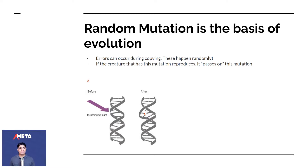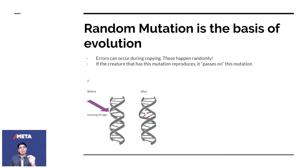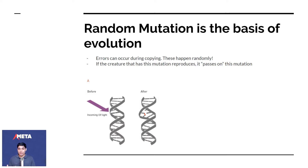If the creature that has a mutation reproduces, it passes on that mutation. Say you're a fish and you give birth, and because of some UV light or radiation your baby fish is slightly different — maybe the pigment in its skin went from blue to slightly purple. When that fish reproduces, all its progeny will have the purple pigment. This is a simplistic view but it's generally how it works.